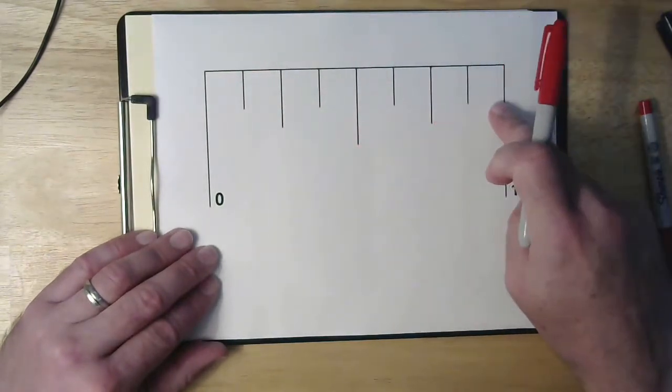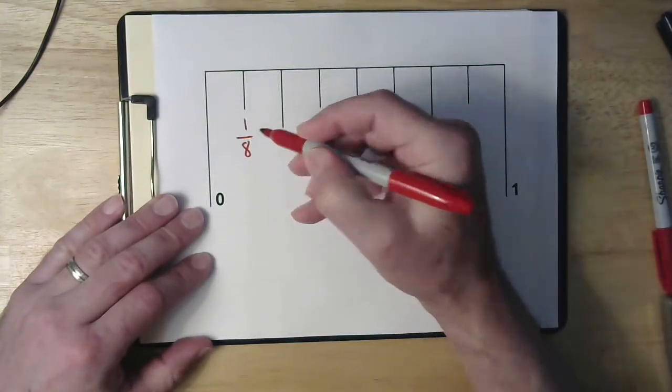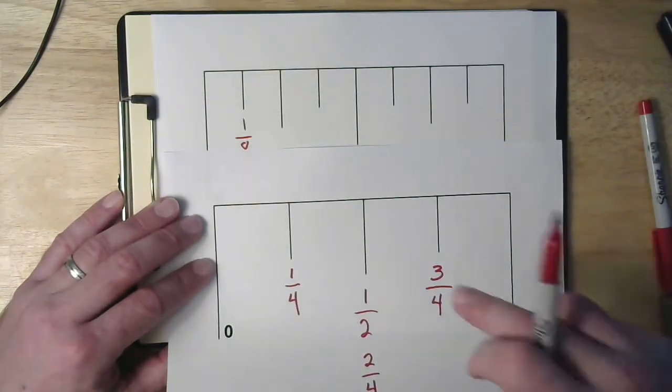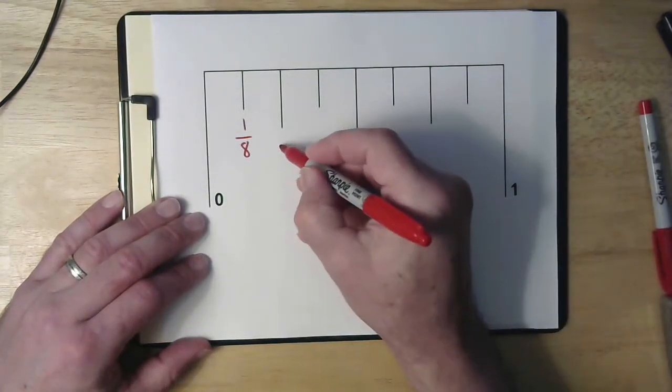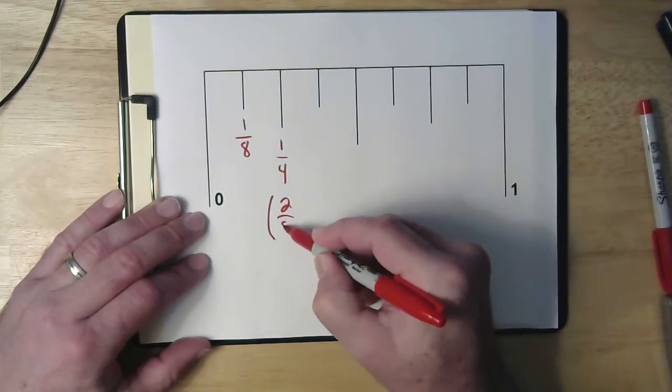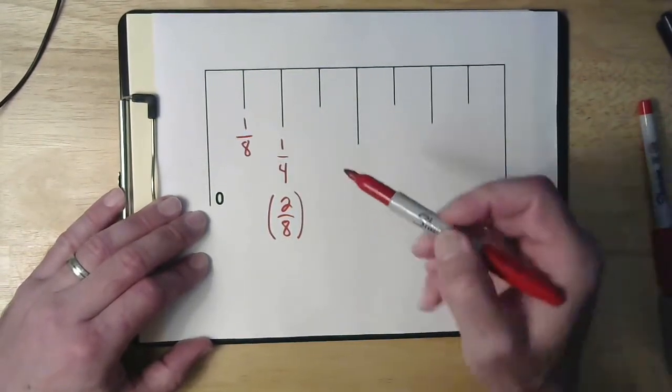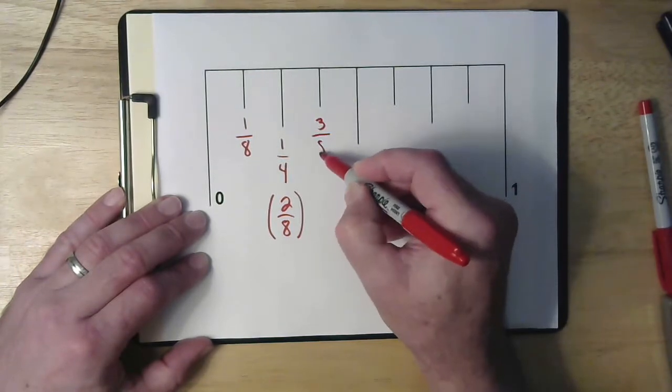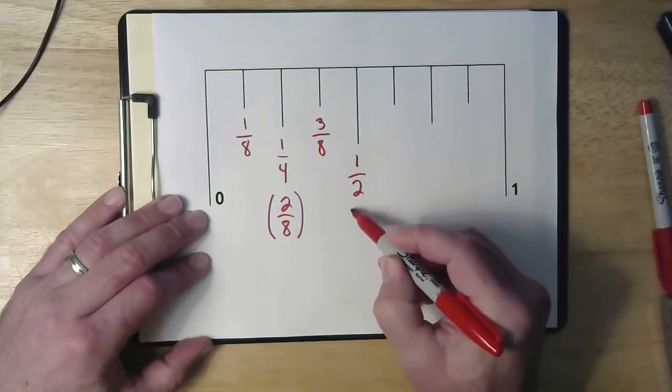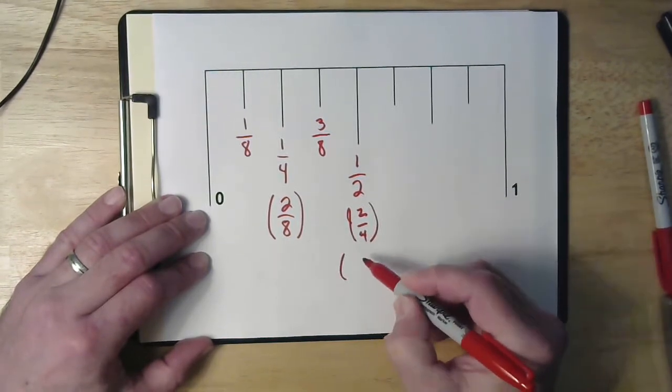So each one of these gaps is an eighth of an inch. So this one over here is one eighth. We already know from the previous one that that next mark is a quarter of an inch. So we know this is one fourth. It's also two eighths, but again, we don't use two eighths because we always want the numbers to be as small as possible. But it is two eighths. And then that makes this one three eighths. This one we already knew from the very first one that that's a half. That's also two quarters, and it's also four eighths.